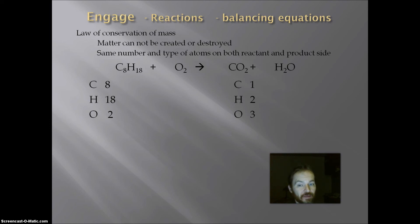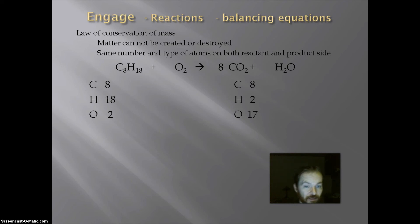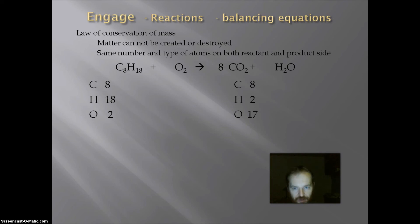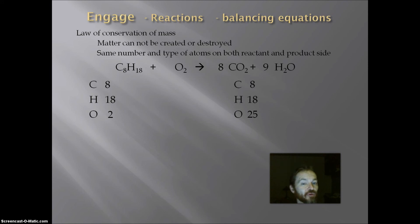Combustion reactions are usually easiest to balance carbon first. I have eight carbon on the reactant side, so I multiply CO2 by eight, giving me eight carbons on the product side. That now gives me 16 oxygens from the carbon dioxide plus one from the water, so 17 oxygens altogether. Then I balance the hydrogen: 18 hydrogen on the reactant side, so I multiply the water by nine, giving me 18 hydrogen on the product side. Now I have 16 oxygens from CO2 and nine from water, giving me 25 oxygens on the product side.